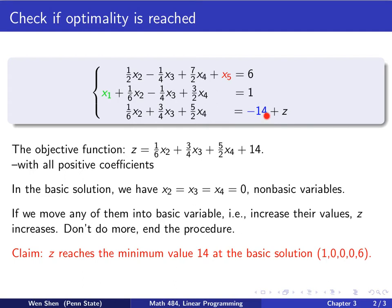And furthermore, you can also claim that the z value now has in fact reached the minimum value, and the value is 14. The negative of this constant here, and the basic solution is x1 is 1, and then 2, 3, 4 are 0 here, and x5 is 6. So this is in red. That you can claim now.